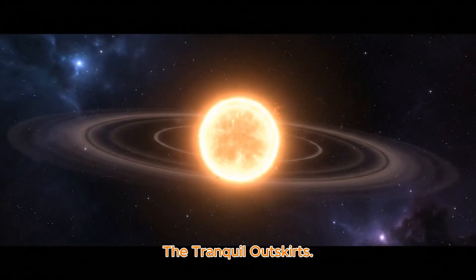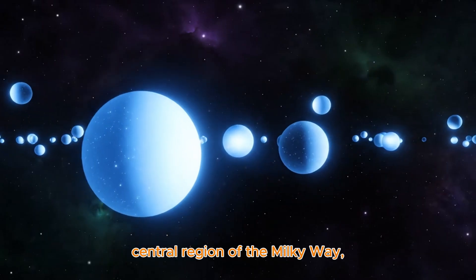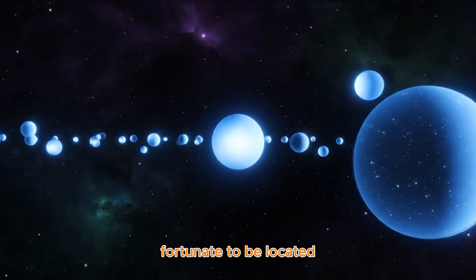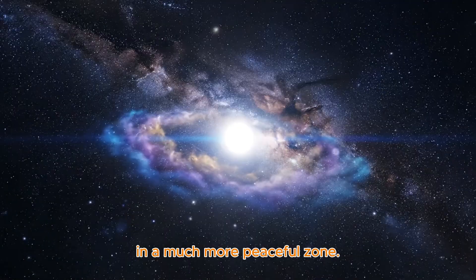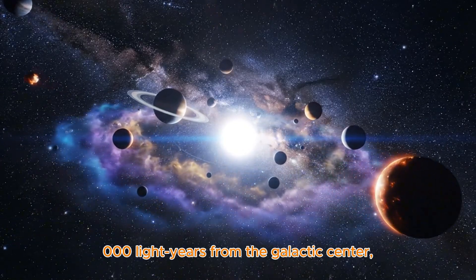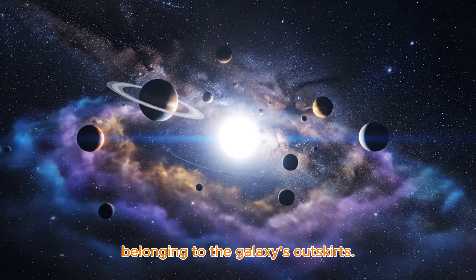The tranquil outskirts. Compared to the chaotic central region of the Milky Way, our solar system is truly fortunate to be located in a much more peaceful zone. The Sun lies about 26,000 light years from the galactic center, belonging to the galaxy's outskirts.